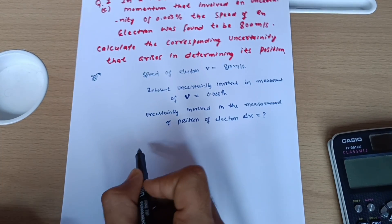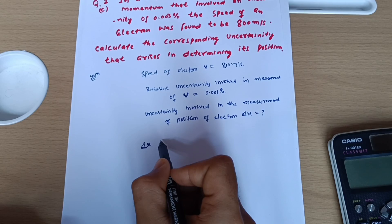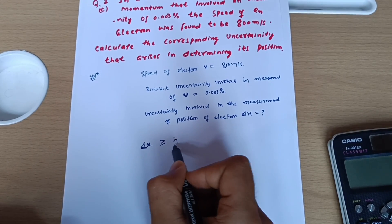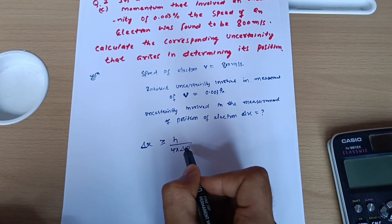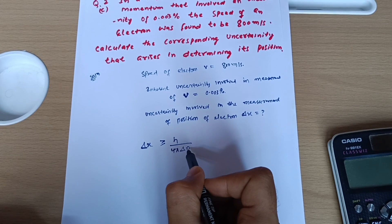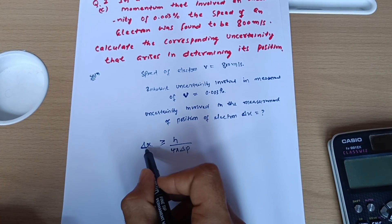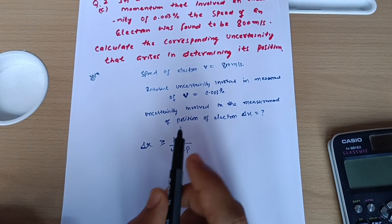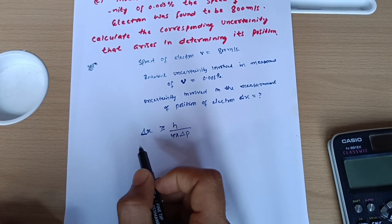First I will write down the formula as per Heisenberg: delta x is greater than or equal to h upon 4 pi delta p, where delta p is the uncertainty in momentum and delta x is the uncertainty in position, which we have to calculate.